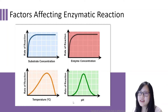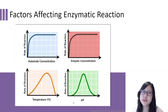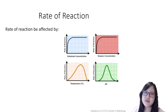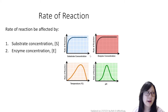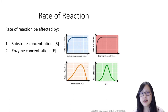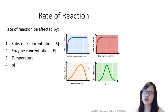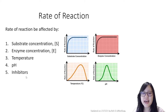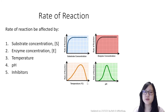Hello everyone and welcome to chapter 3.3. This is Factors Affecting Enzymatic Reaction, part 2. In the previous video, we looked at how the rate of reaction can be affected by substrate concentration, enzyme concentration, temperature, and pH. But we did not talk about one more factor, which is enzyme inhibitors. We're going to talk about that today.